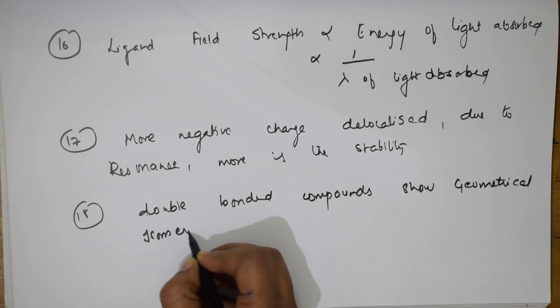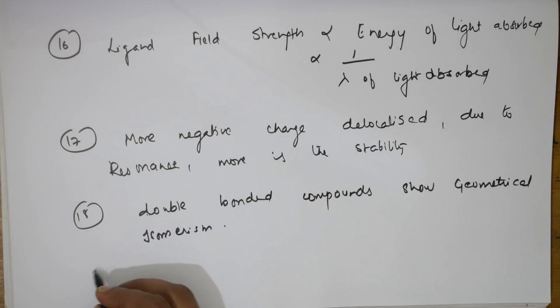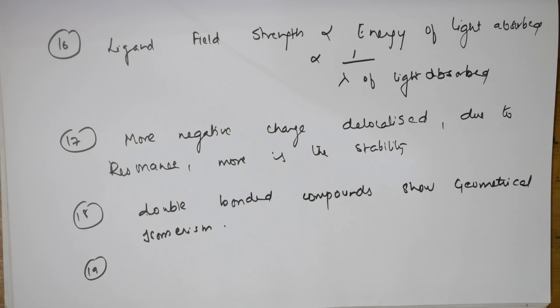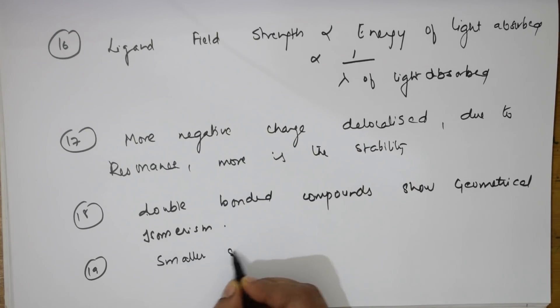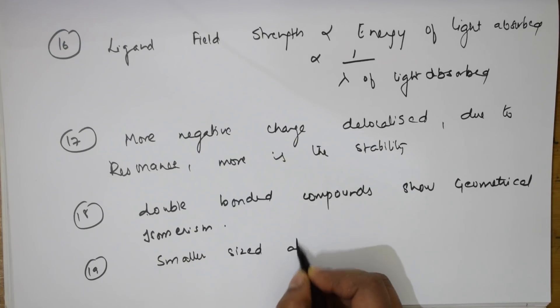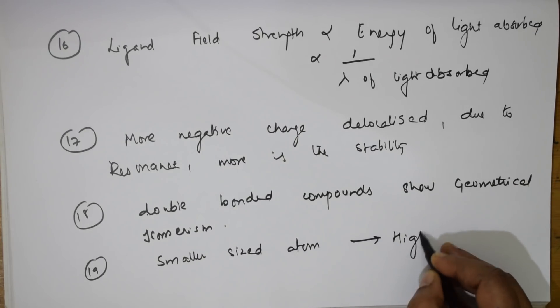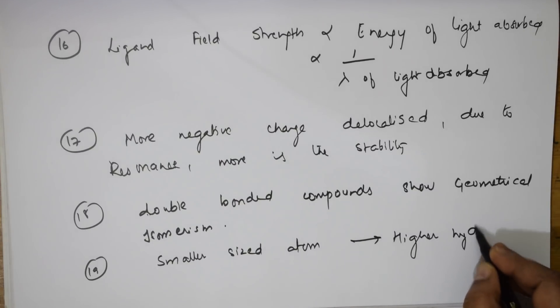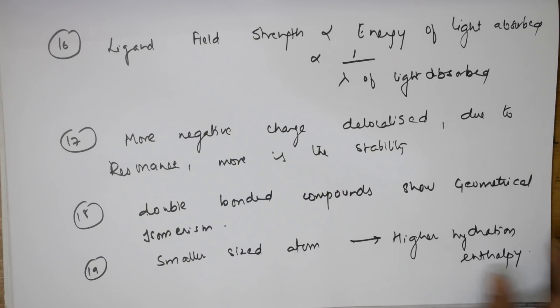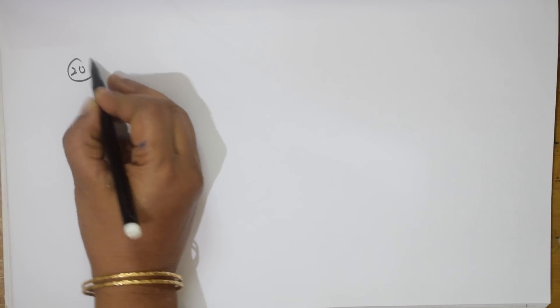The 19th concept is about hydration enthalpy. If an atom is smaller in size, it will have higher hydration enthalpy. Remember this — smaller sized atom means higher hydration enthalpy.